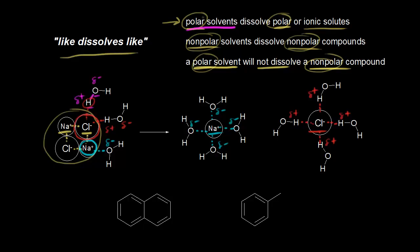So our polar solvent, water, needs to be able to interact with our solutes. In this case, the polar solvent attacks the solid and replaces these ion-ion interactions of our crystal with ion-dipole interactions in our solution. By ion-dipole, I mean we have a cation — that's our ion — and then our dipole would be water, which is a polar molecule with a dipole moment. So we have all of these ion-dipole interactions.